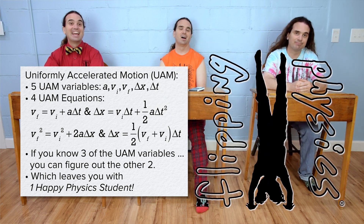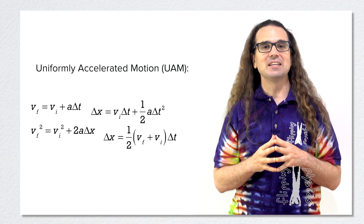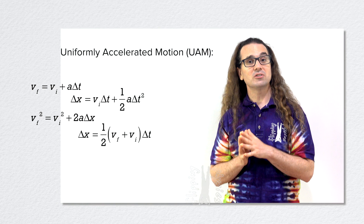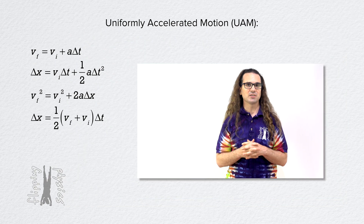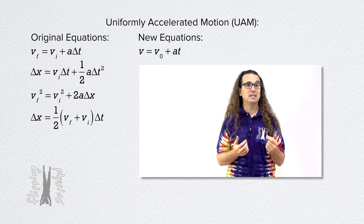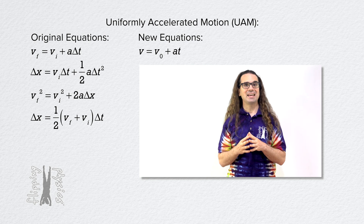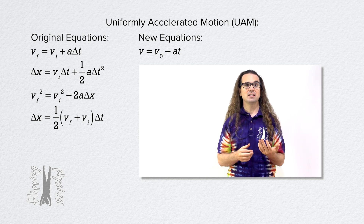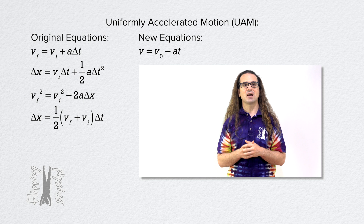Flippin' physics. Now I am going to introduce alternate versions of all four of these equations. The first equation is v equals v sub zero plus a times t. Or: velocity equals velocity sub zero plus acceleration times time.